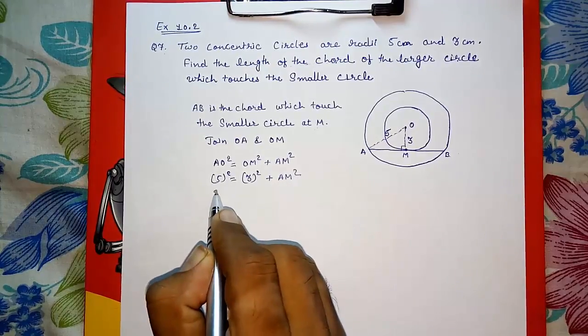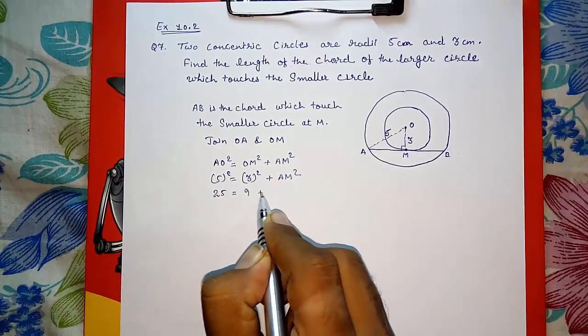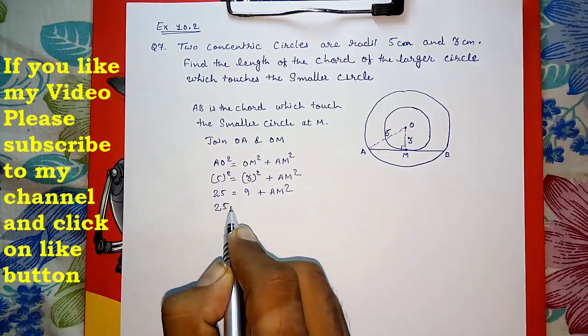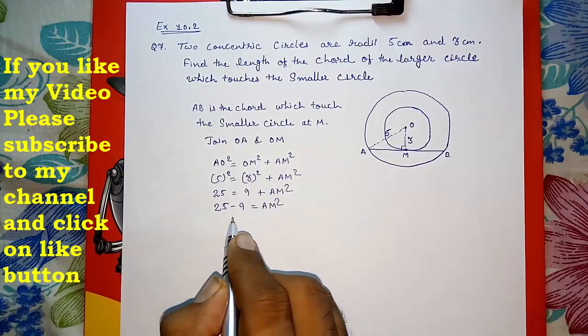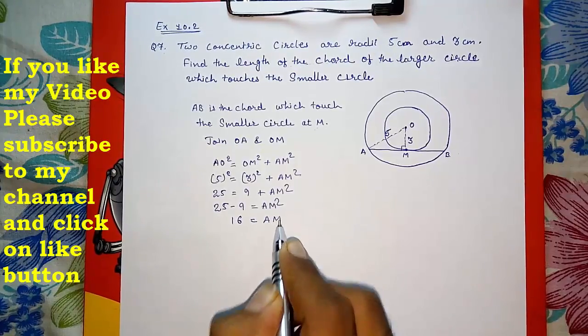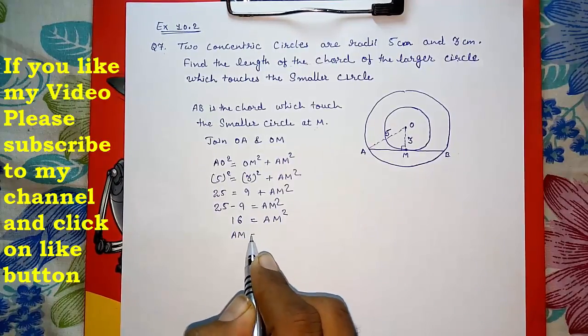So this will be 25 equals 9 plus AM². 25 minus 9 is equal to AM². So 16 is equal to AM². What will be AM? AM will be √16, and √16 means AM is equal to 4.